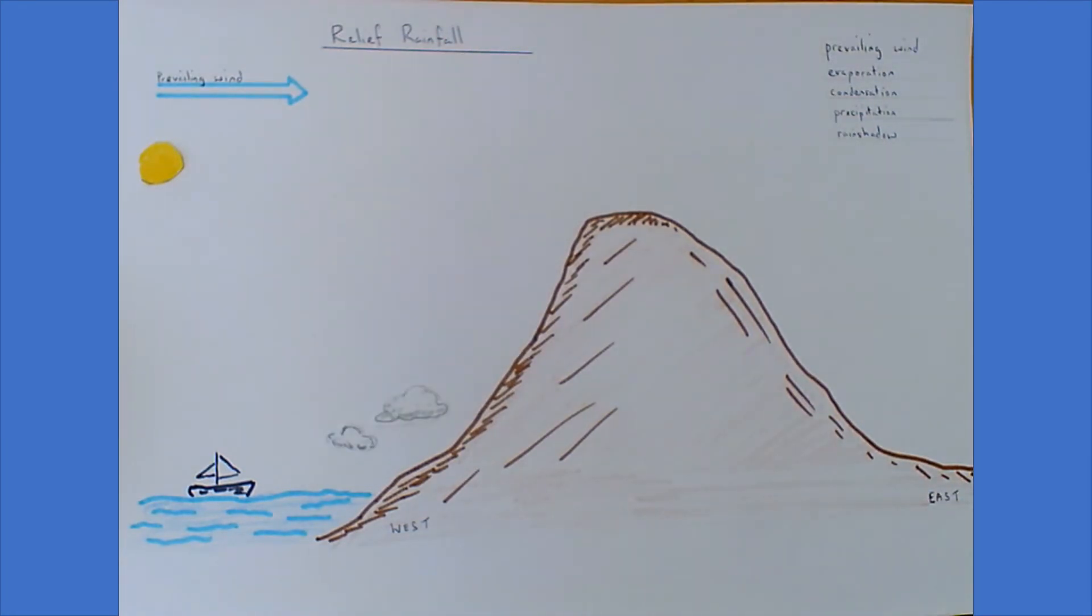As the moist air reaches land, it is forced to rise upwards over the mountain. This forces the moist air to cool as it gets higher up because the greater the altitude, the cooler the atmosphere is at a rate of 0.6 degrees for every 100 meters. As the moist air cools, the moist gas condenses and turns back to water droplets. We can see this with the formation of rain clouds.